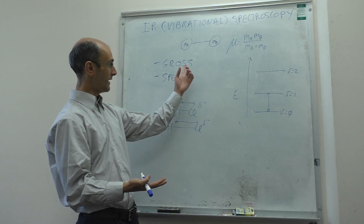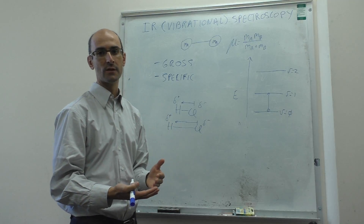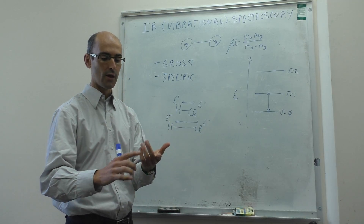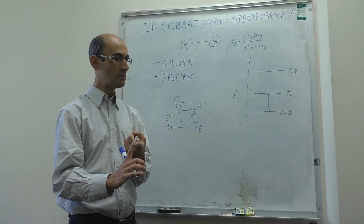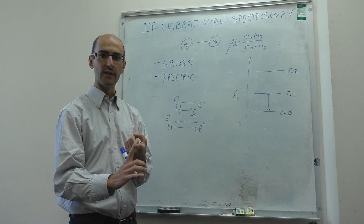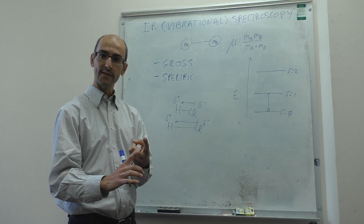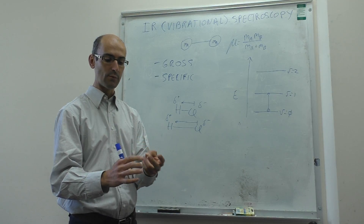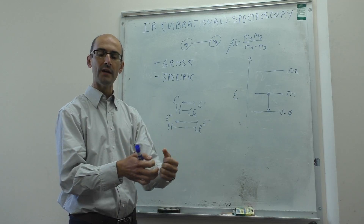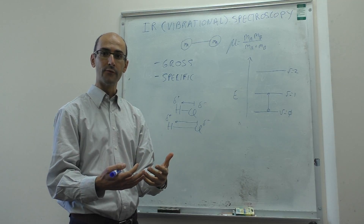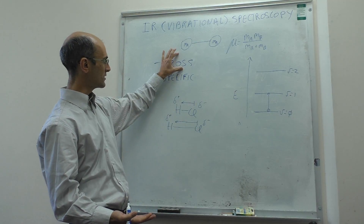This sets up the gross selection rule for diatomic molecules in infrared: homonuclear diatomic molecules are not infrared active. Heteronuclear diatomic molecules, if they have a permanent dipole moment that changes during vibration, will be infrared active.